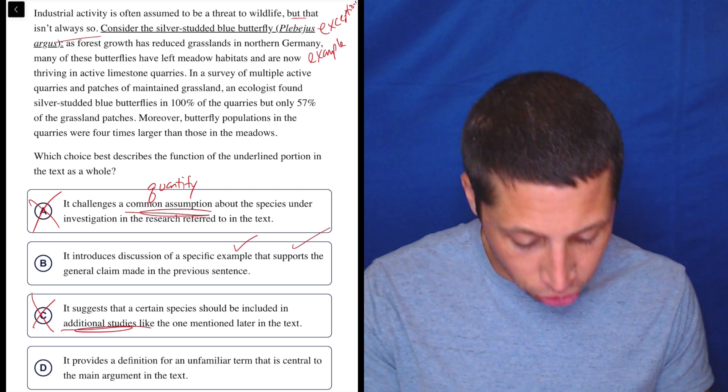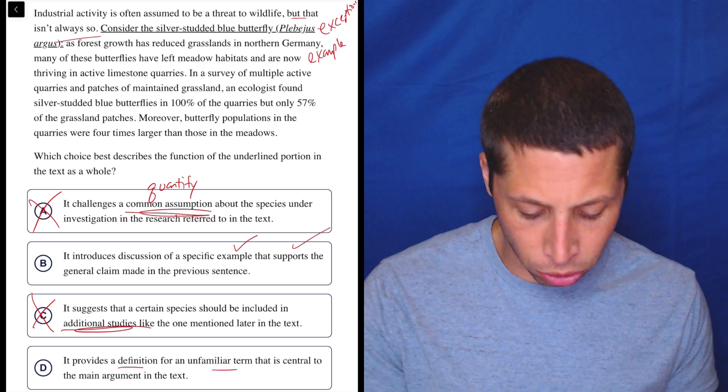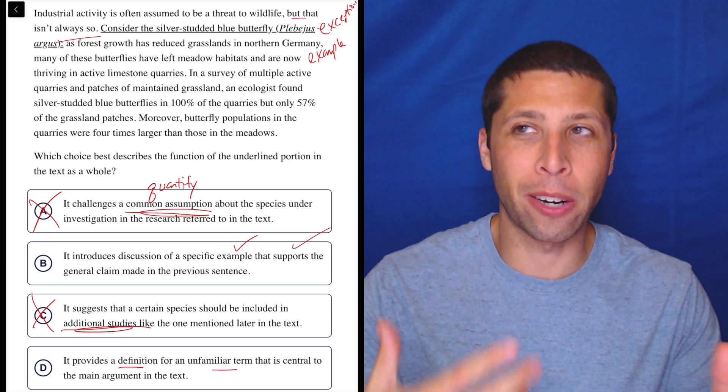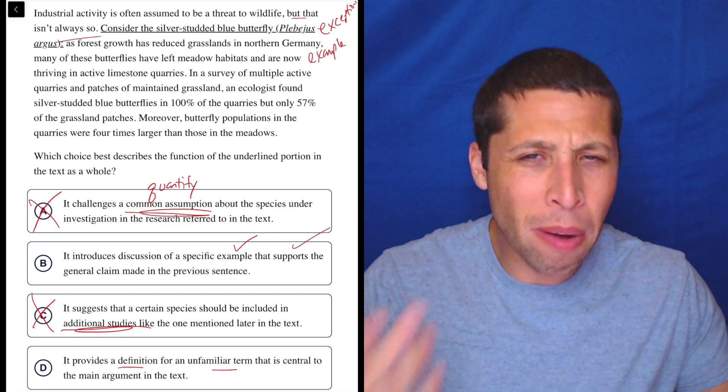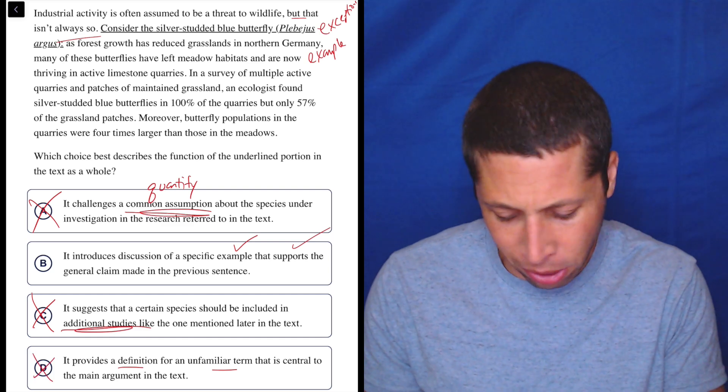D, it provides a definition. No, it doesn't. For an unfamiliar term, what's the term, that is central to the main argument in the text. The term is not the butterfly. A term is like a vocab word. So, the name of a butterfly is not a term or a definition. So, it's gone.